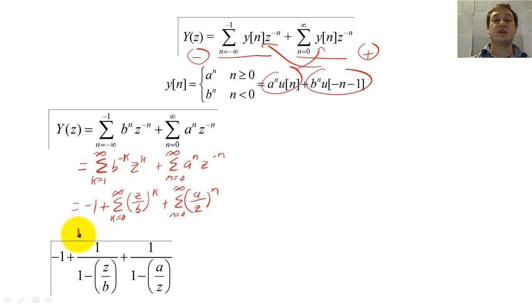The left fraction will converge when the absolute value of Z is less than B, and when the absolute value of Z is greater than A.